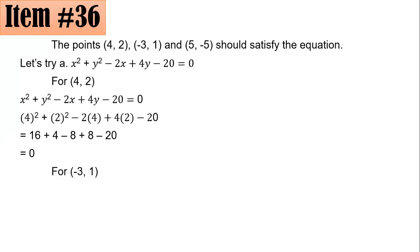How about for the second one? For (-3, 1), substituting to the same equation, you will have (-3)² + 1² - 2(-3) + 4(1) - 20. You will have 9 + 1 + 6 + 4 - 20, which is equal to 0 as well. So therefore, it's satisfied.